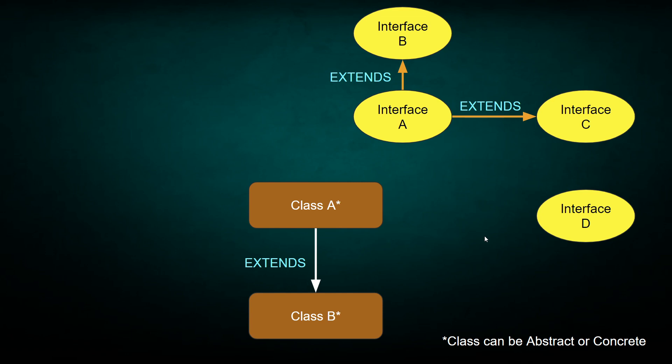Now the relationships between classes and interfaces are like this. A class can implement — must implement if you want to use it — interfaces. You can implement as many interfaces as you want. But a class can only extend one class; you cannot extend more than one class.